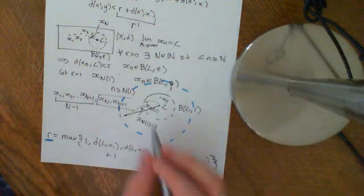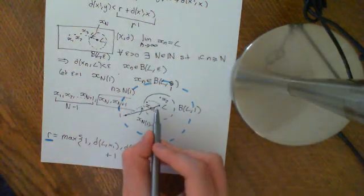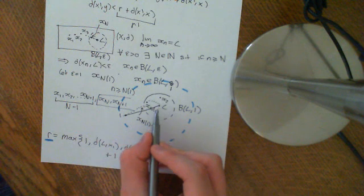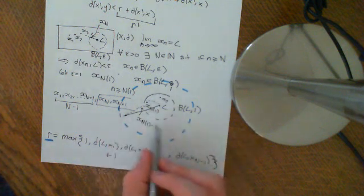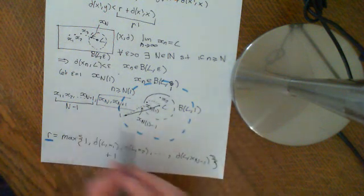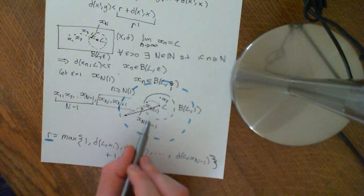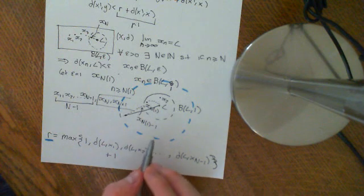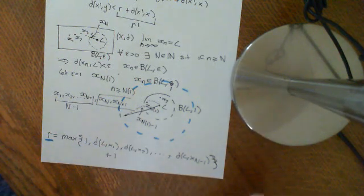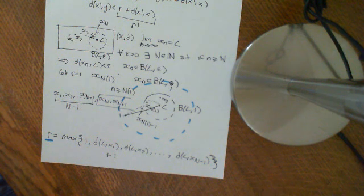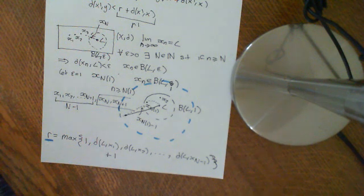So what I've done is constructed an open ball around a single point of the metric space which contains this entire set — the set of all points of the sequence — and that was the definition we needed for this set to be bounded. And if the set's bounded, then the sequence is bounded. So that is the proof that all convergent sequences are bounded.